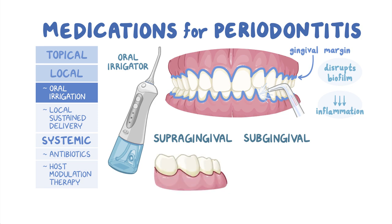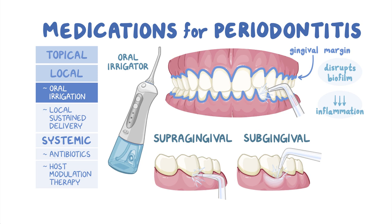In supragingival irrigation, a tip is placed above the gingival margin. This makes supragingival irrigation effective in removing bacterial biofilm along the gingival margin. On the other hand, in subgingival irrigation, a tip is delicately placed beneath the gingival margin so irrigation penetrates deep into periodontal pockets and targets the bacteria in around 70% of the subgingival region.